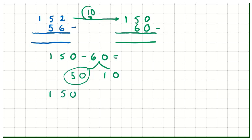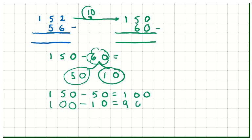So, 150 take away 50 gives me 100. I've taken away my 50. Now, I need to take away my 10 because I was taking away 60 altogether. So, now I'm going to do 100 take away 10 which gives me 90. So, I know that this is going to roughly be around 90.